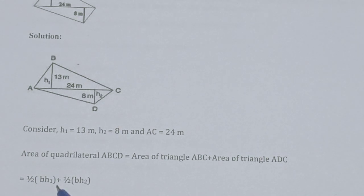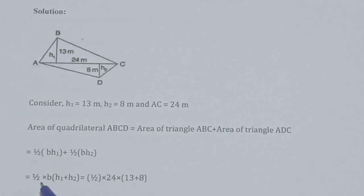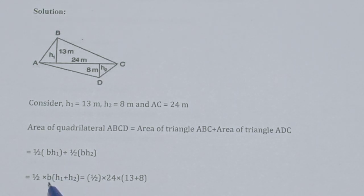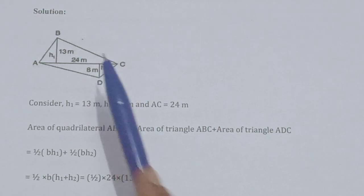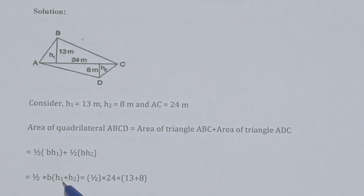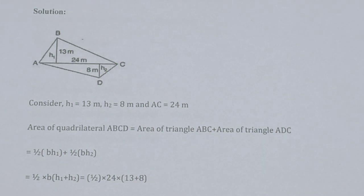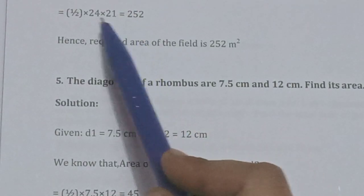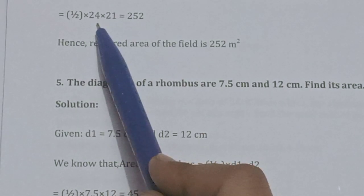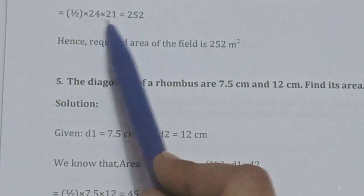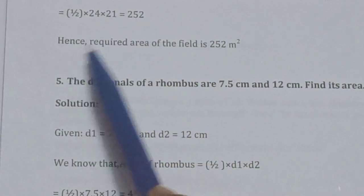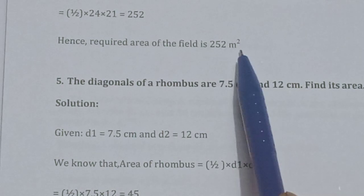Area of quadrilateral equals half into base into h1 plus half into base into h2, so half into base into (h1 plus h2). The base is 24, h1 is 13 and h2 is 8, so h1 plus h2 equals 21. Therefore: half into 24 into 21 equals 252. Hence the required area of the field is 252 meter square.